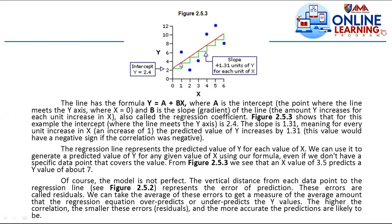We project x upward to the regression line, then project left to read y — your y is equal to 3.7. For example, as a sample ages by one year, their glucose level increases by 1.31. That is linear regression — from the word 'line,' hence we have a straight line, which is why it is called linear regression.